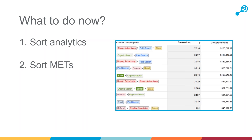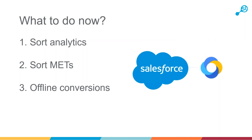Likewise, display advertising — prospecting display and remarketing should be dealt with as two separate channels because they are entirely different things. You should be seeing those as separate channels in your analytics. If you've got offline conversions and you're a B2B site, you should be tying up your offline conversions into analytics. Don't optimise for leads — not all leads are equal. Optimise for actual sales or pipeline value. We have a video on our website that covers how to do this.